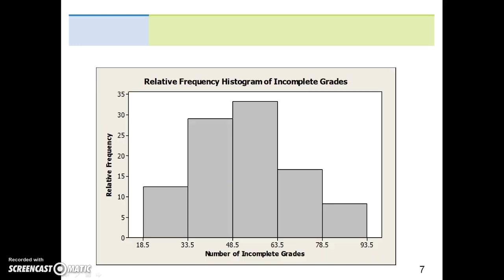The relative frequency histogram of incomplete grades should look like this. There's 5 classes and they have the following boundaries. Notice the title and labels provided for the axes.